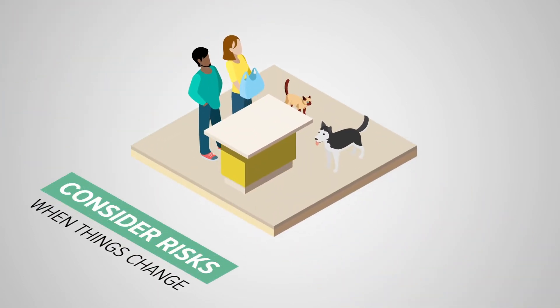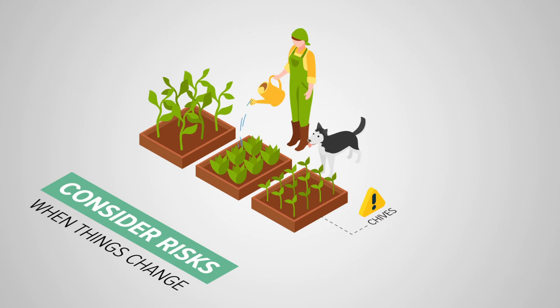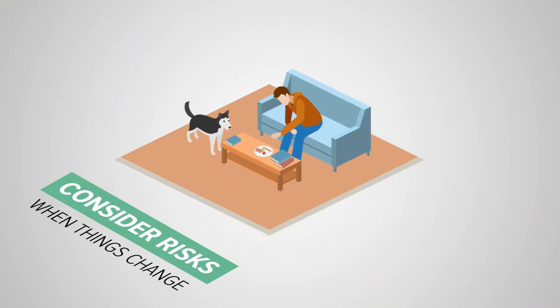Next, get into the habit of considering potential risks whenever something at your house changes. This could include things like using a new household product, starting a new hobby, or having guests over. When something changes, consider how it might affect your pet.